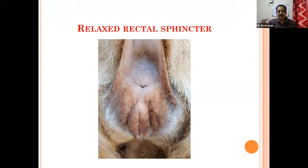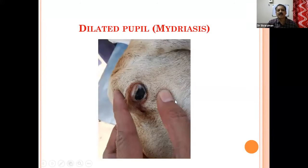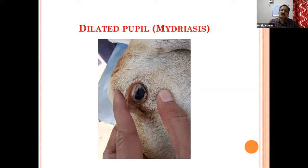The animal will be in a comatose state. The rectal sphincter is slightly relaxed — you can very much appreciate these clinical signs. The animal is unconscious and the pupil is dilated. From the history, you can ask whether the animal is in full-term pregnancy and then make a tentative diagnosis of hypocalcemia. The pupil is very much dilated. For other conditions — enterotoxemia and plant poisoning — the pupil will also be dilated, but in those cases the animal won't go to comatose stage; it will have severe convulsions. So you can differentiate from the other differential diagnoses.